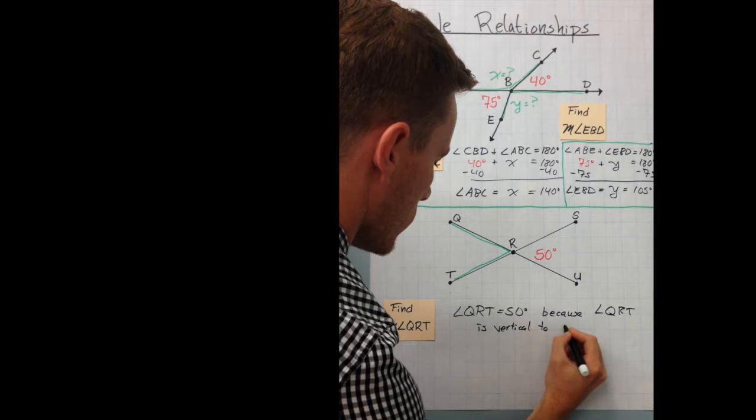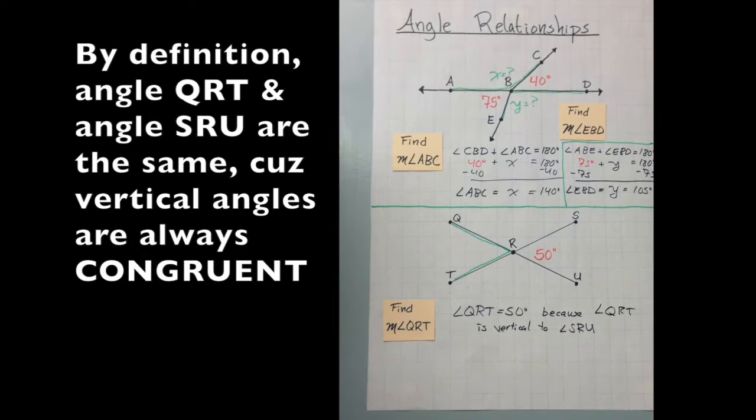Because angle QRT is vertical to angle, what is it? SRU? Yeah. SRU. All right.